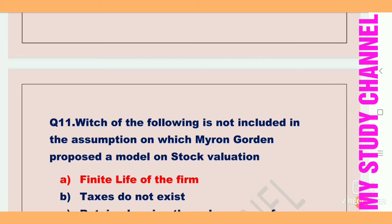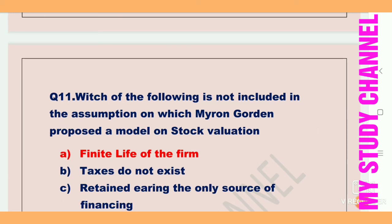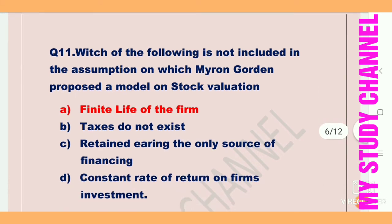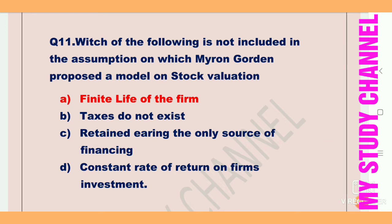Next question: which of the following is not included in the assumption on which Myron Gordon proposed a model on stock valuation? Option A is finite life of the firm, B is taxes do not exist, C is retained earning is the only source of financing, D is constant rate of return on firm's investment. Option A is the right answer — finite life of the firm is not included in Myron Gordon's assumptions for his stock valuation model.